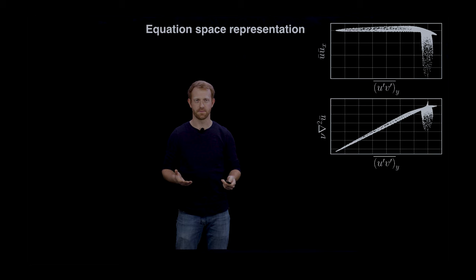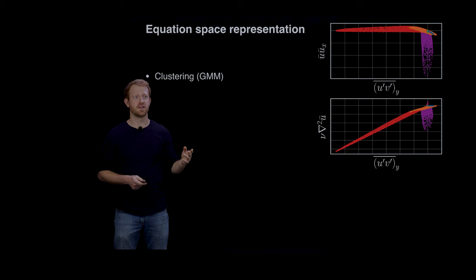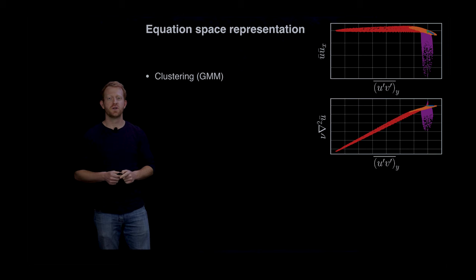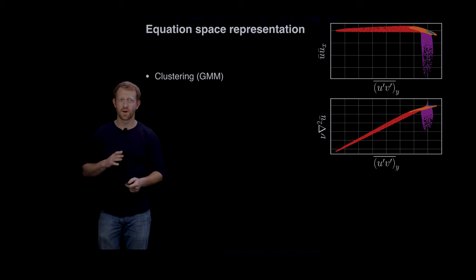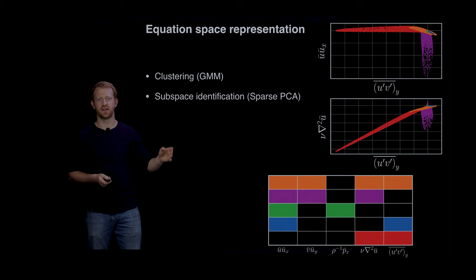Now that we have our equation space representation of the field, we can think about using unsupervised learning methods to look for sets of points with variance in distinct directions. We could imagine using any number of algorithms to do this, but we just choose some simple ones that are available off the shelf from scikit-learn. Basically the idea is we're looking for clusters of points that are approximately restricted to some subspace, and then we can interpret the active directions of that subspace as the active terms in that cluster.